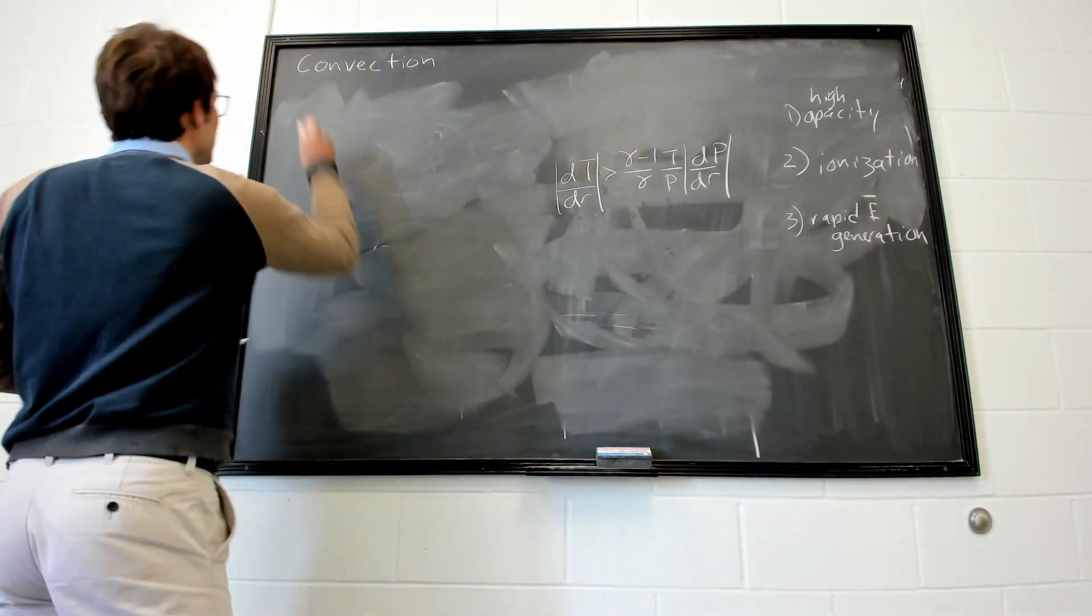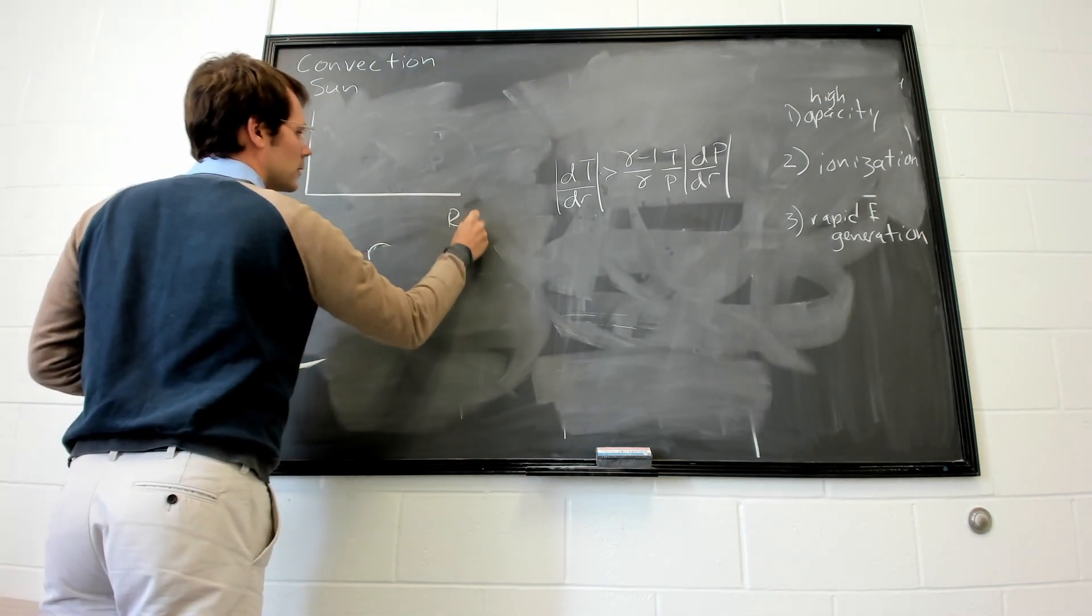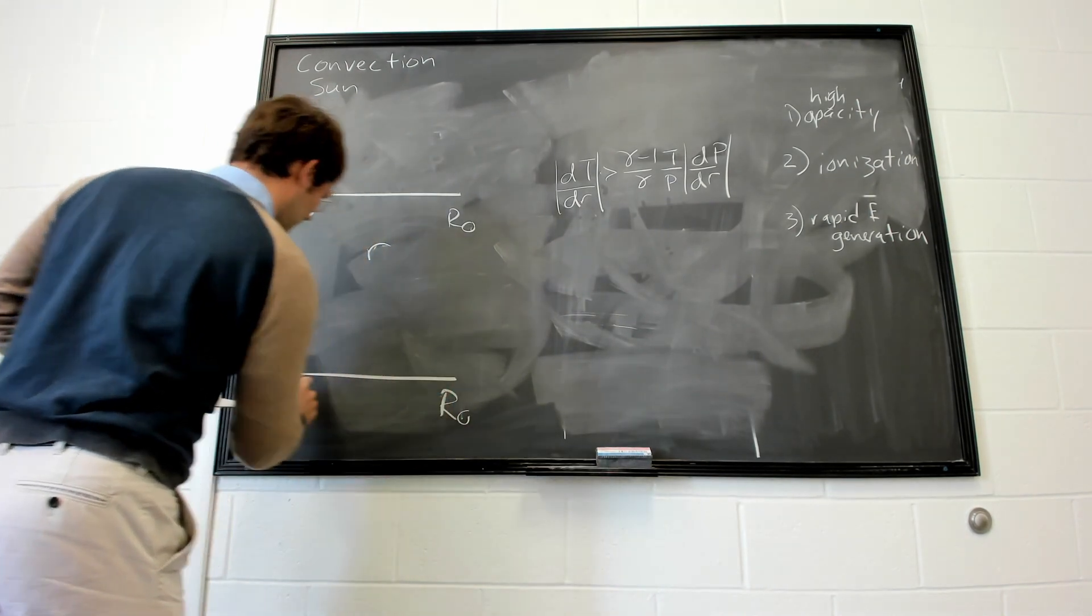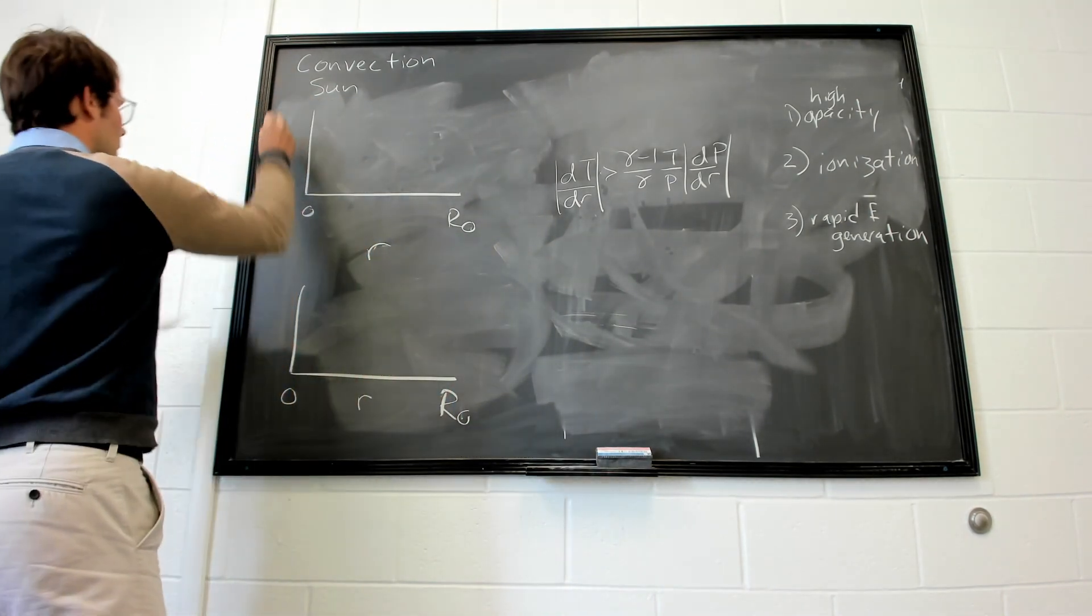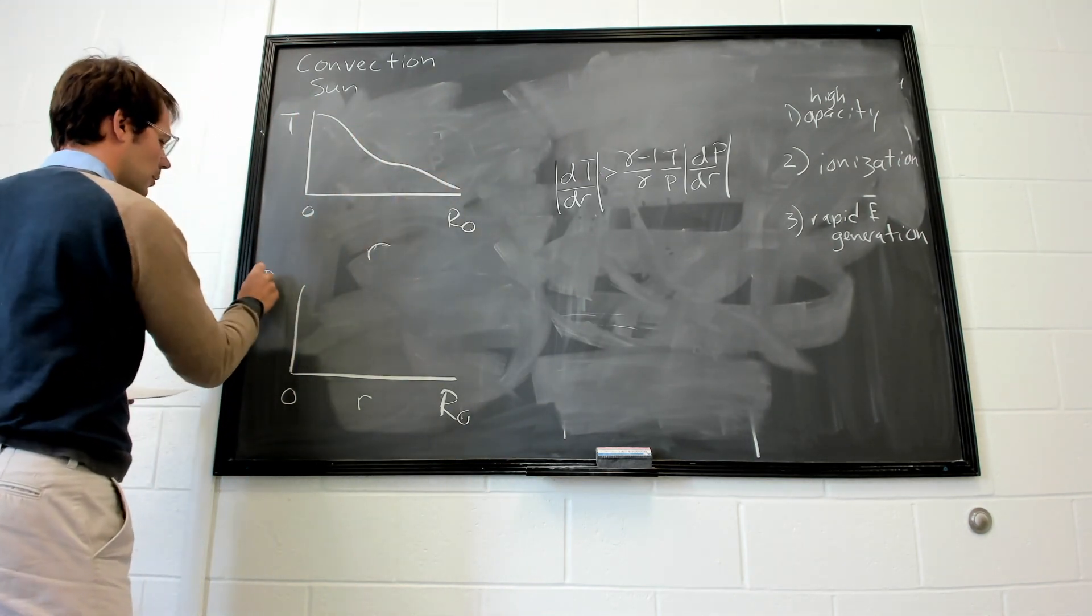So if we were to look at the sun, and we were to plot as a function of radius, this would be zero. So if we plot the temperature, we're going to have a temperature profile like that. Pressure, we might have a pressure profile like this.